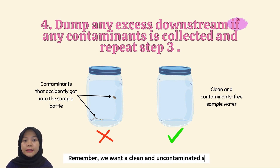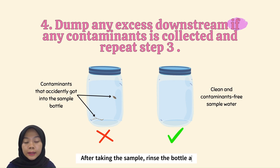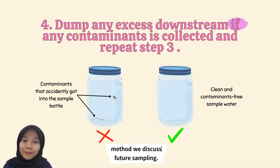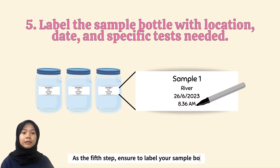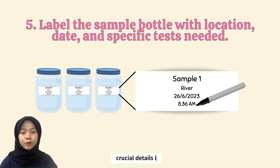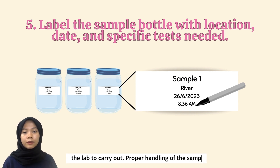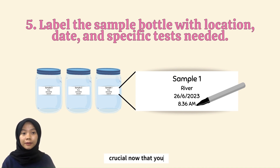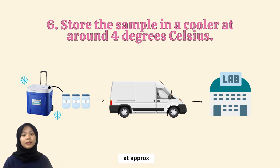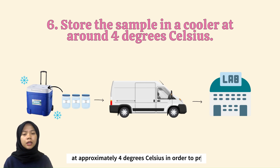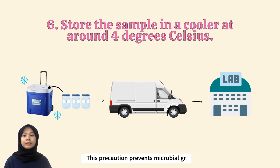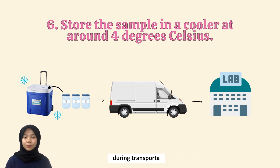We want a clean and uncontaminated sample. After taking the sample, rinse the bottle again using the same method discussed earlier — this ensures the bottle remains clean for future sampling. As the next step, make sure to label your sample bottle with crucial details, including the location, date, and specific tests you require the lab to carry out. Proper handling of the sample is crucial now that you have it. Finally, store and keep the sample refrigerated at approximately 4 degrees Celsius in order to preserve its integrity. This precaution prevents microbial growth and ensures the sample remains stable during transportation to the laboratory.